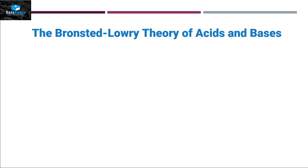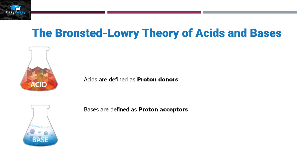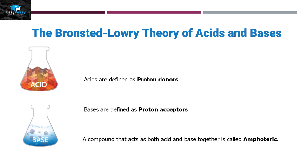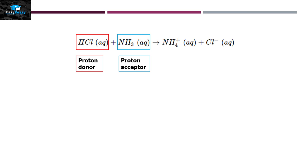That's why we have the Bronsted-Lowry theory. According to Bronsted-Lowry, acids are proton donors and bases are proton acceptors. A compound that can act both as an acid and a base is called an amphoteric compound, just like water. In the reaction of hydrochloric acid with ammonia, HCl donates a proton — so it is an acid — and ammonia accepts that proton — so it is a base.